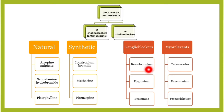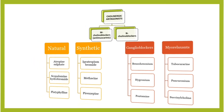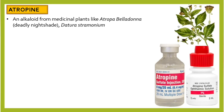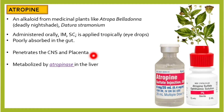We will talk about these drugs later. In this video, let's focus on atropine. Atropine is derived from medicinal plants like Atropa belladonna, a deadly nightshade. It is administered orally, intramuscularly, subcutaneously, and it can be applied topically as eye drops.